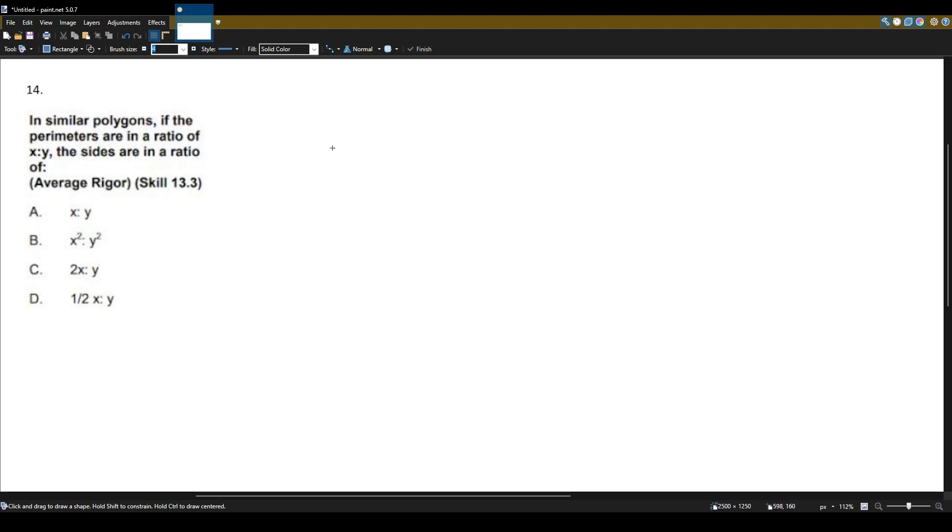So why don't we just draw two polygons and compare them? Two similar polygons. The idea of similar is that the sides should be the same ratio to each other. But let's just see what that looks like visually.